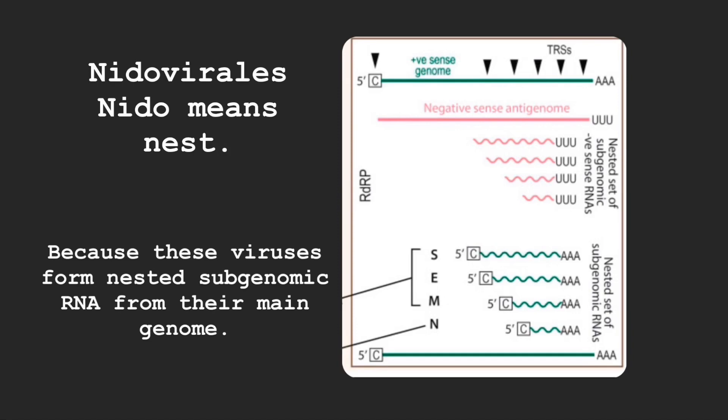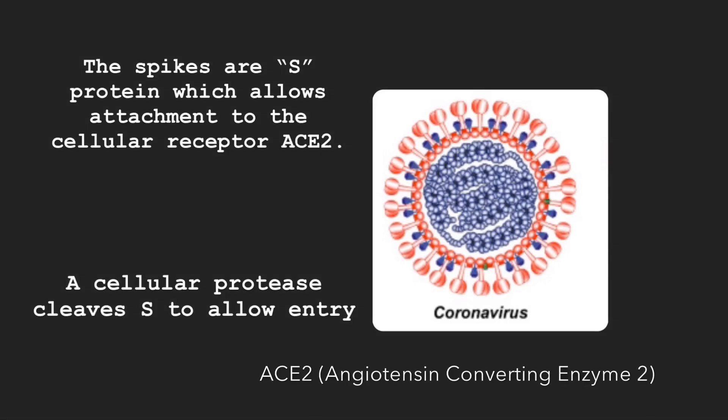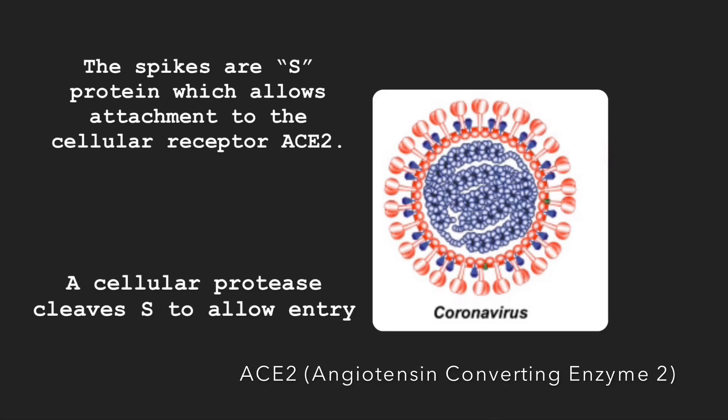That nested subgenomic RNA is used to produce proteins that form the new virus. Back to the spike proteins that give it the solar corona appearance — the spikes consist of protein S, which allows attachment to the cellular receptor. For SARS and COVID-19, the cellular receptor is ACE2, or angiotensin-converting enzyme 2.